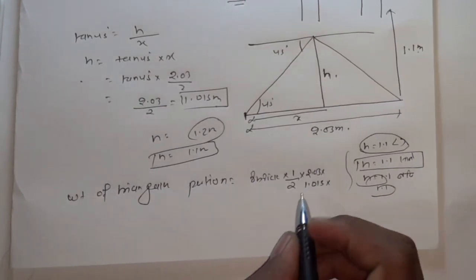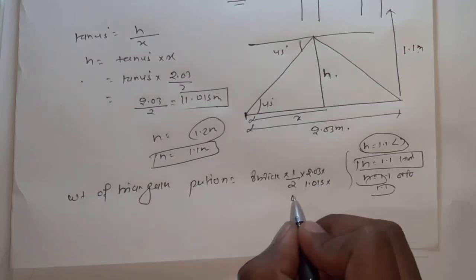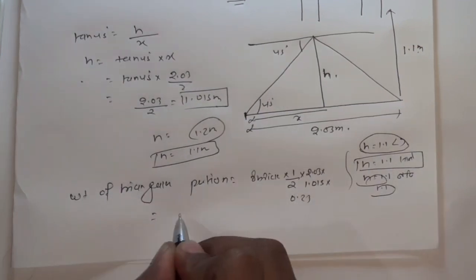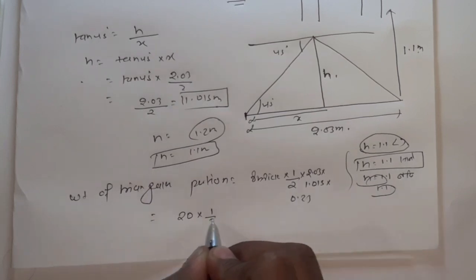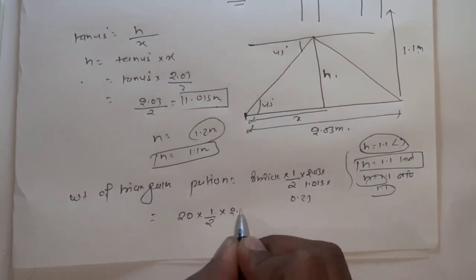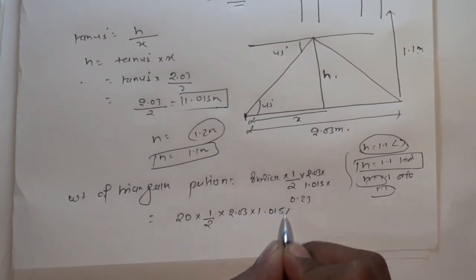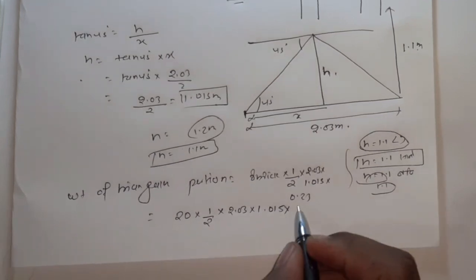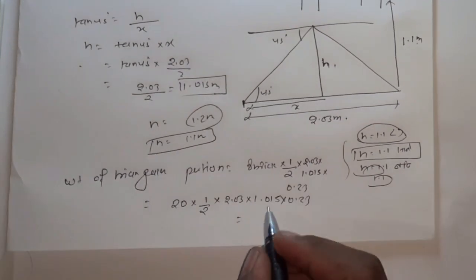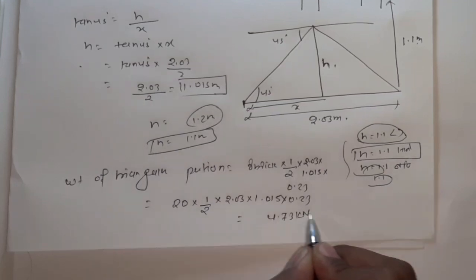The triangular load W equals: gamma brick into height into effective span by 2 into thickness of wall. That is: 20 into 1.015 into 2.03 into 1.015 into 0.23, giving a total triangular load of 4.73 kN.